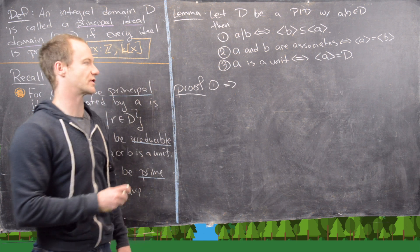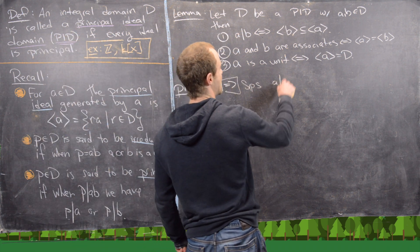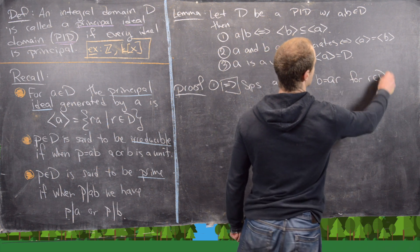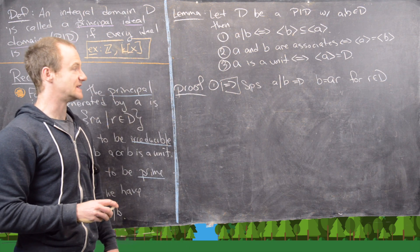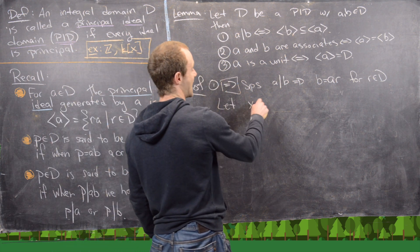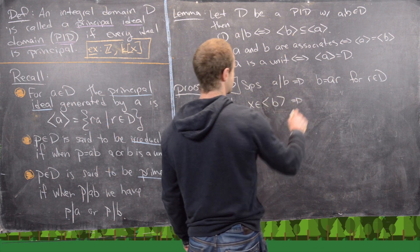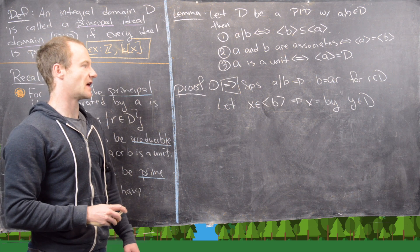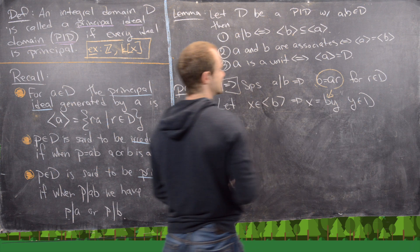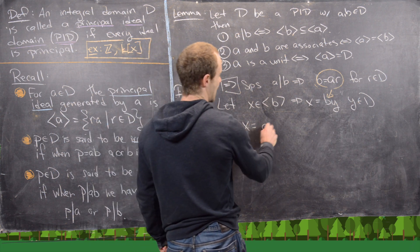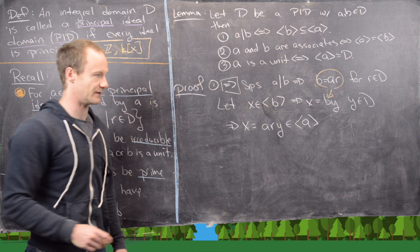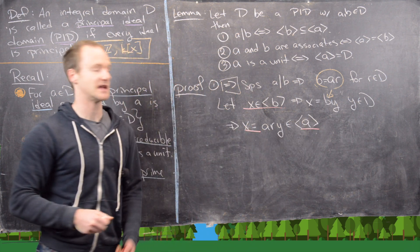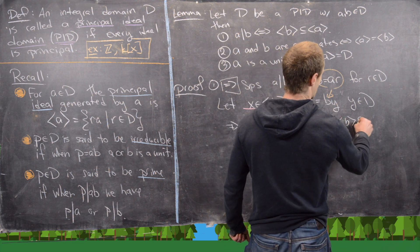Let's prove part one, starting with the forward direction. Suppose A divides B, so B equals A times R for some R in the ring. Now let X be in the principal ideal ⟨B⟩, so X equals B times Y for some Y. Substituting, we get X equals A times R times Y, which is definitely an element of ⟨A⟩. So by element-tracing, anything in ⟨B⟩ lands in ⟨A⟩, giving us the correct inclusion.